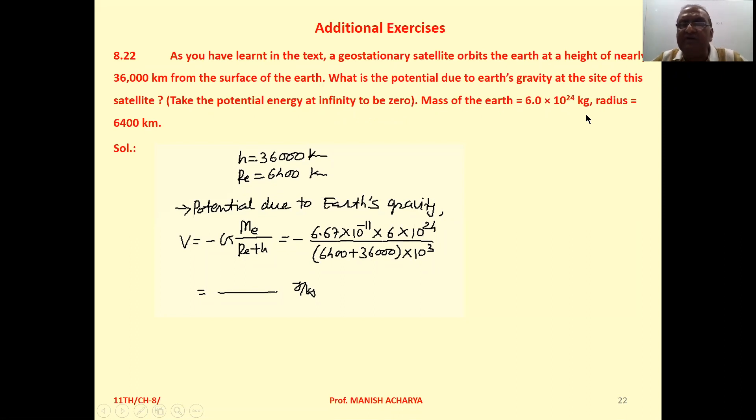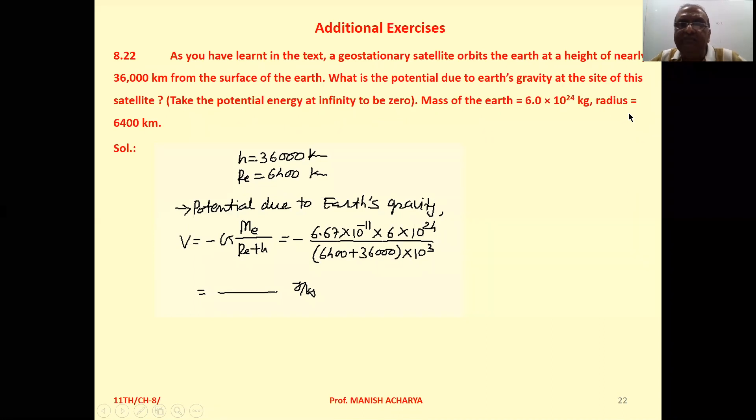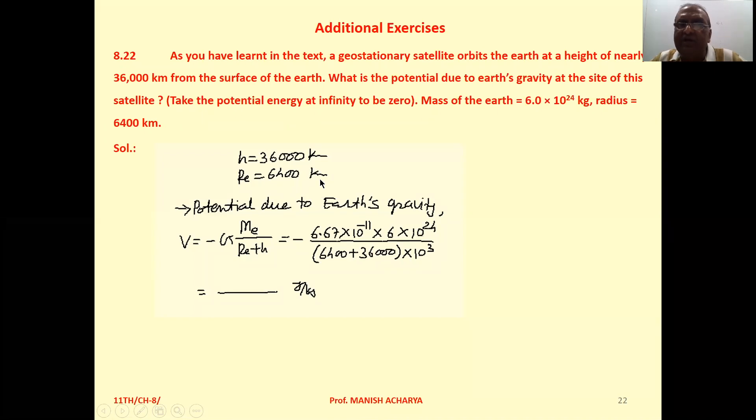Mass of Earth is 6 into 10 raised to 24 kg and radius is 6400 km. Now see, H is 36,000 km, radius is 6400 km.